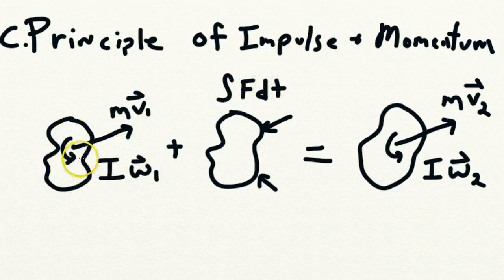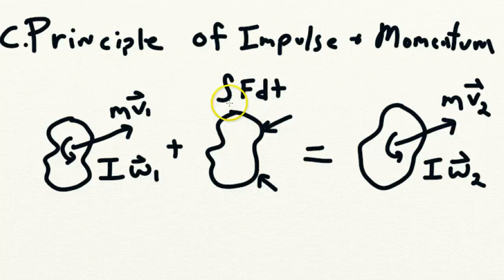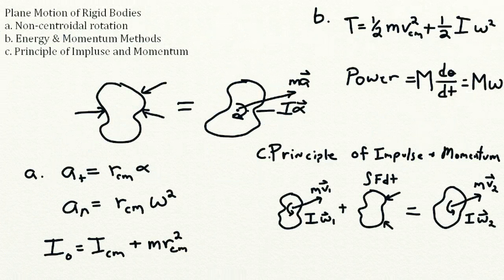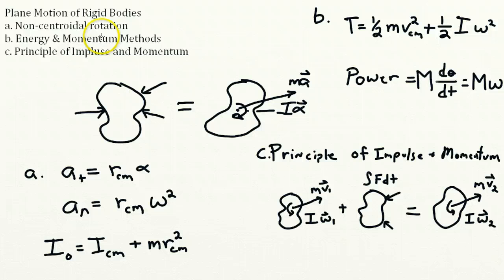That's the principle of impulse and momentum applied to the plane motion of a rigid body: it has rotational and linear momentum, you add in an impulse as the integral of force over a short time, and that equals the final linear plus angular momentum. We broke the overall topic into three subtopics: non-centroidal rotation, energy and momentum methods, and the principle of impulse and momentum.